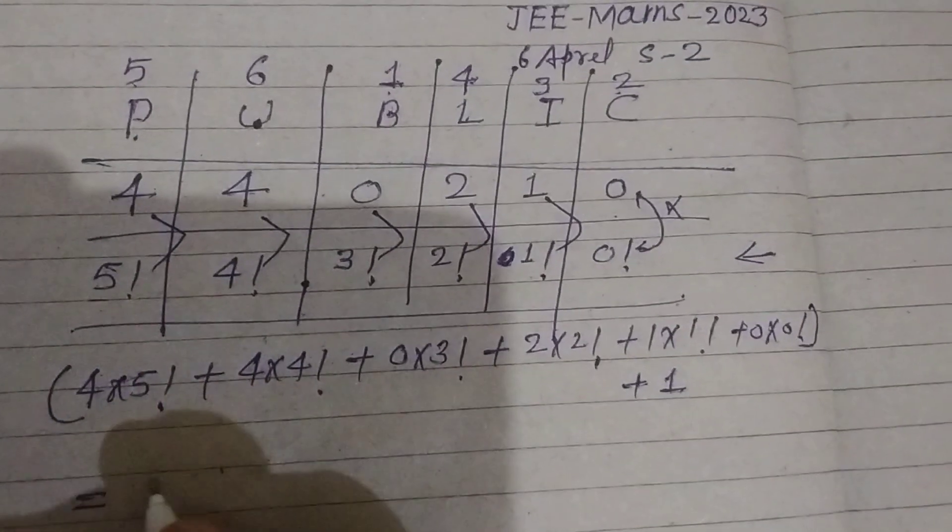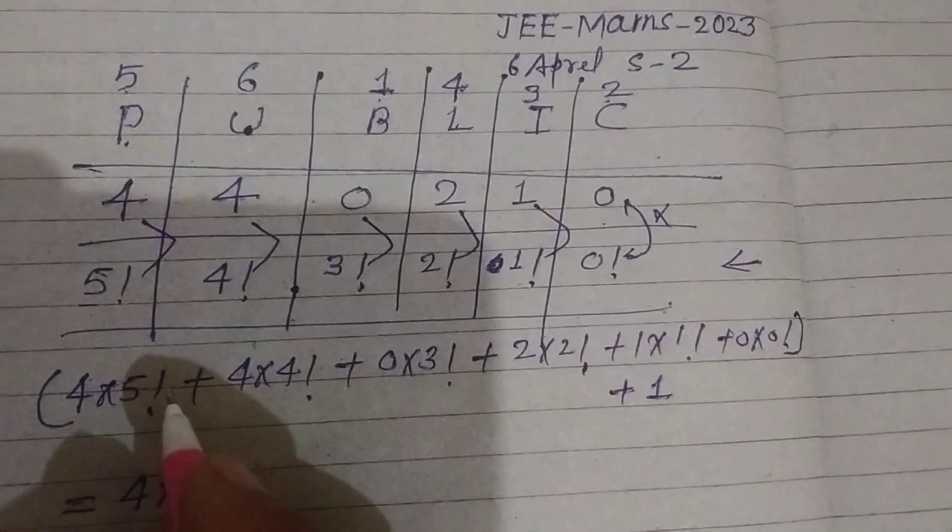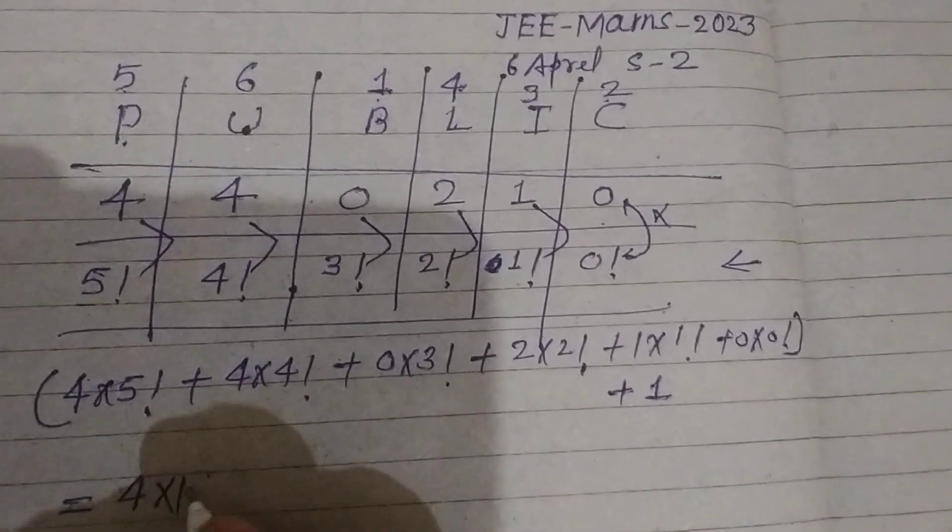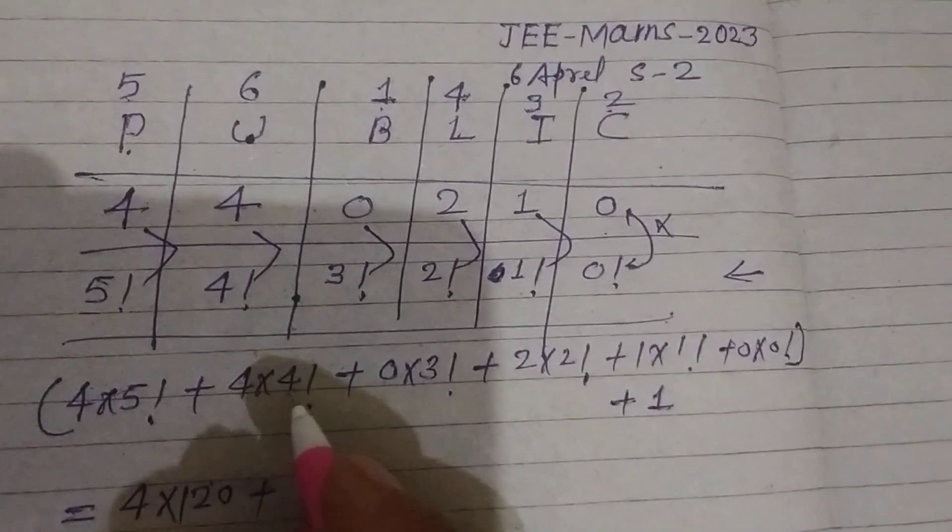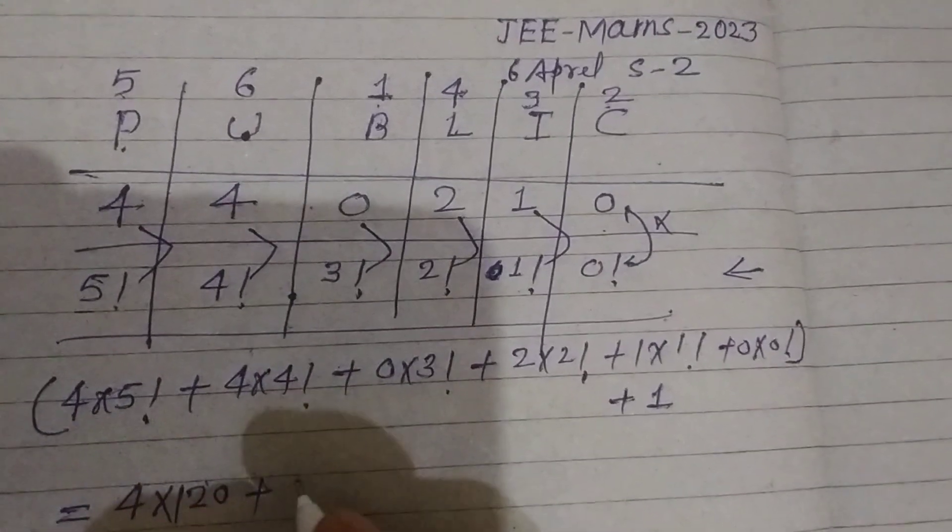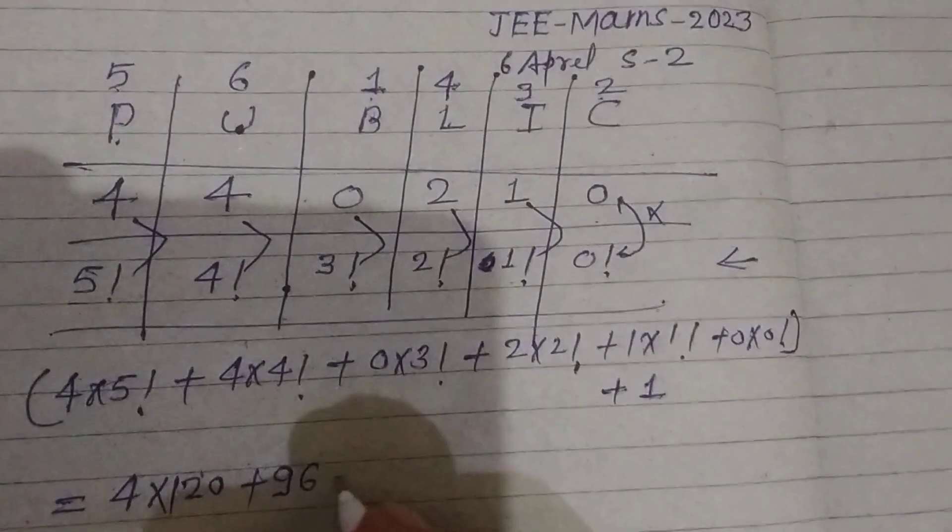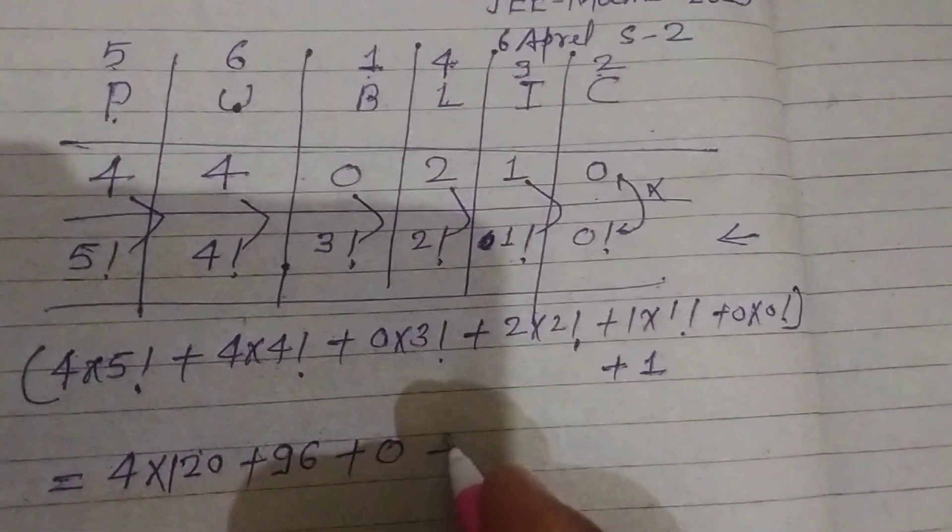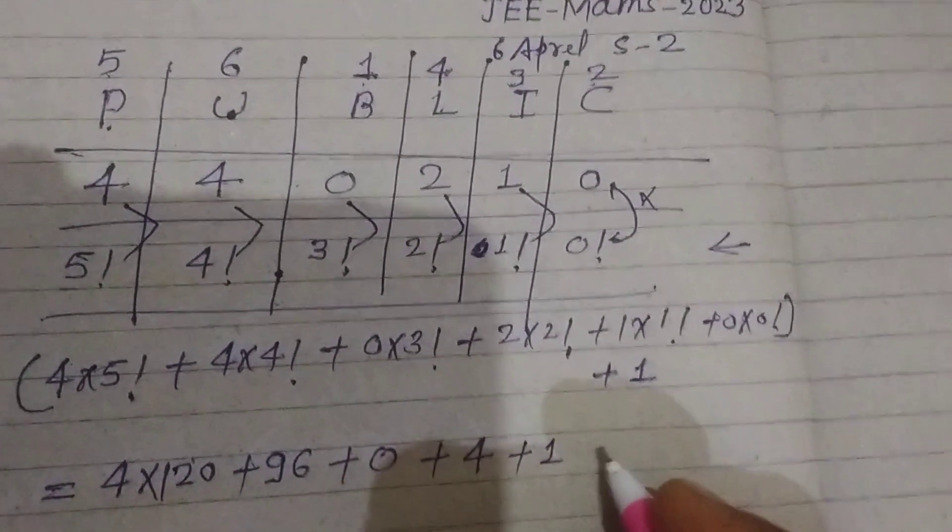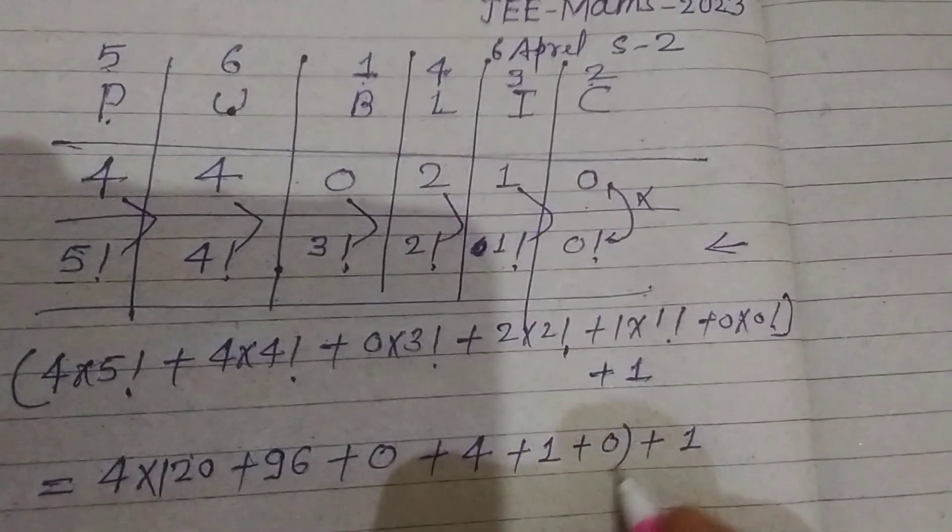Now solve it. 4 into 5 factorial: 5 factorial means 120, so 4×120. 4×4 factorial: 4×3×2×1 is 24, so 4×24 equals 96. And this is 0, and this is 2×2 is 4, and this is 1, and this is 0. Now add 1.